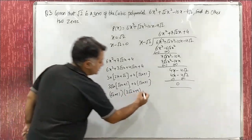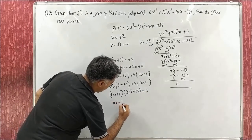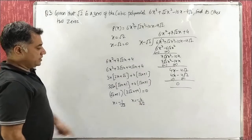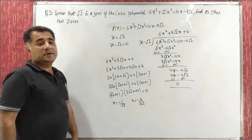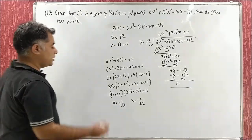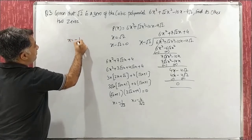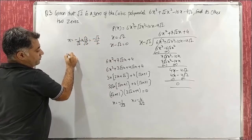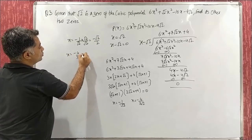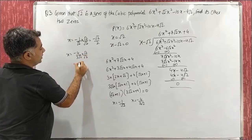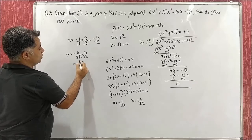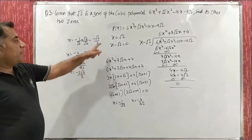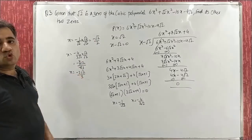Setting zeros: x = −1/√2 and x = −4/(3√2). We rationalize to remove radicals from the denominator. −1/√2 × √2/√2 = −√2/2. And −4/(3√2) × √2/√2 = −4√2/6 = −2√2/3. So x = −√2/2 and x = −2√2/3.